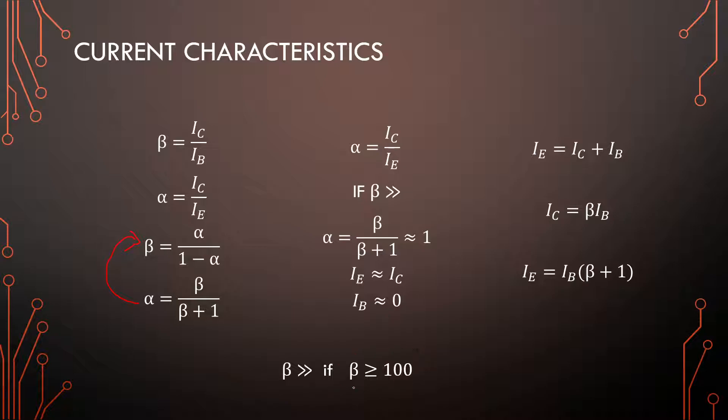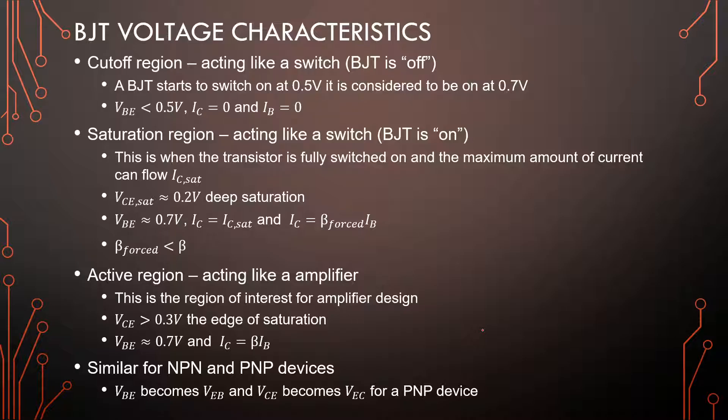However, if your beta tends to be very small or you want to exactly calculate something, don't make this assumption. For power transistors, something like the BD241, the beta is 25 or 10 at high currents. You can't make this assumption anymore. Beta is not that large. So then you're going to have to go through all the steps and panes to get everywhere. So this is kind of a nice page to memorize. This is valid for NPNs and PNPs. So it's quite nice.